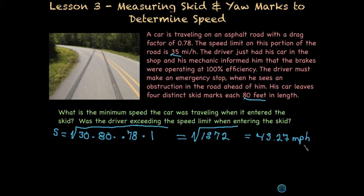Okay, so that's the minimum speed that the car was going. It was going at least 43.27 miles per hour, and yes, the driver was definitely exceeding the speed limit, which was only 35.